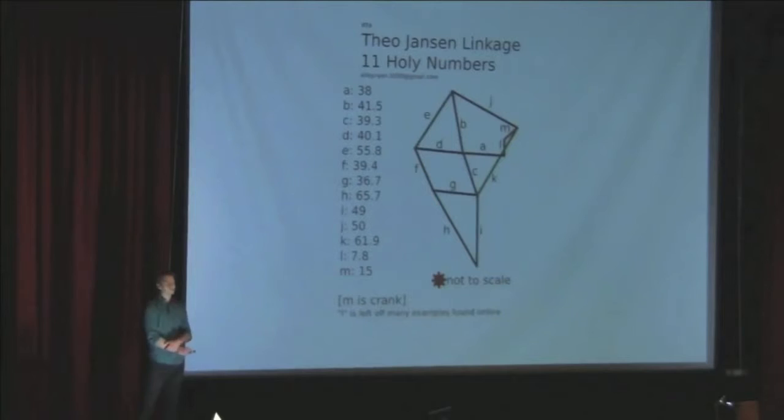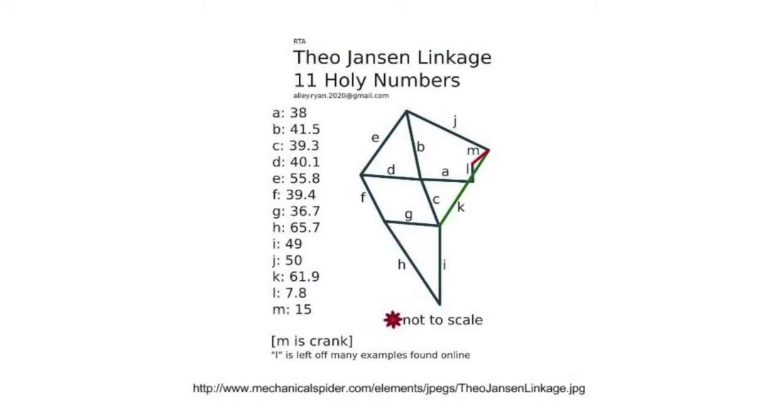Now, these strand beasts are only possible with Theo Jansen's Eleven Holy Numbers, which basically describe the ratio of triangles that make the mechanism work. Now, although this is quite pretentious and godlike, I guess you could say, I wasn't quite convinced that they were a new life form. But I was inspired by the way they moved, and thought that one day it would be an interesting design challenge to build.